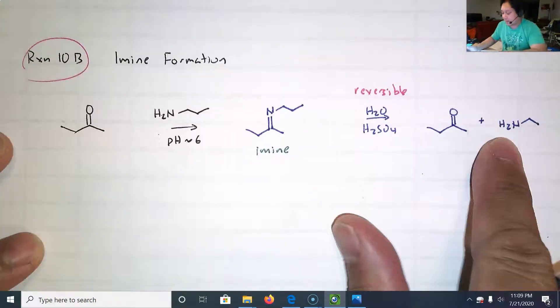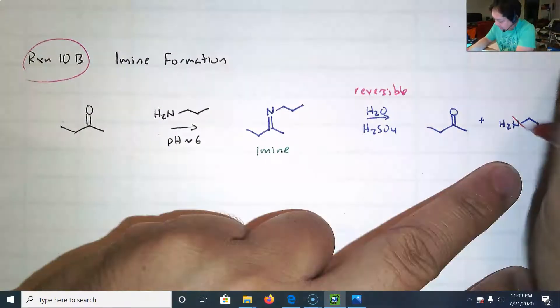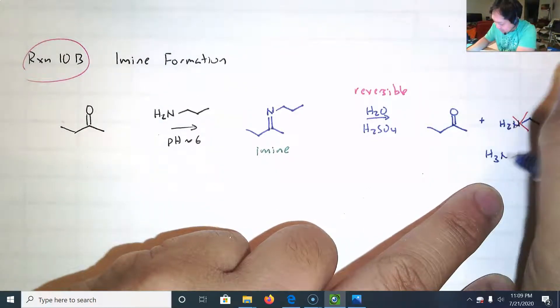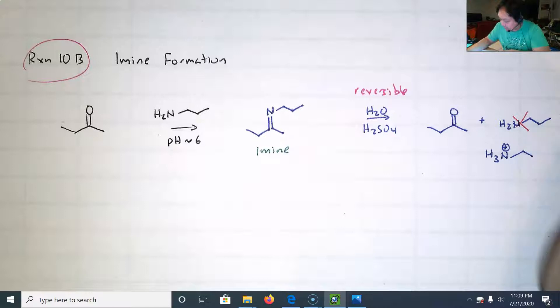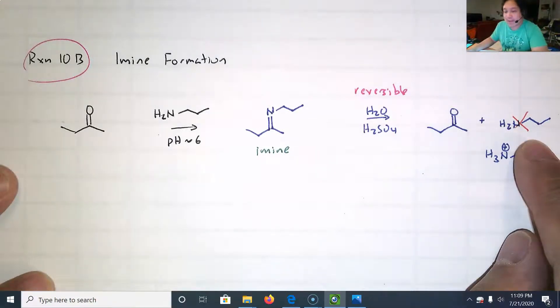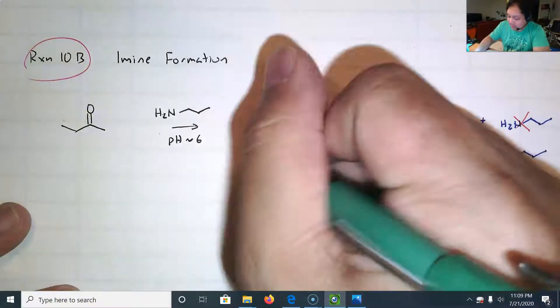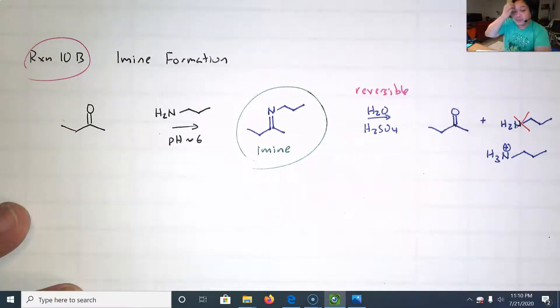Technically, this probably should be protonated because you're under acidic conditions. So let's remind ourselves that amines are basic. Instead of that 1-propanamine, we have the protonated 1-propanamine. But really, all you're doing is a hydrolysis. We are interested in the imine part though, and I'm going to show you the mechanism to make the imine.